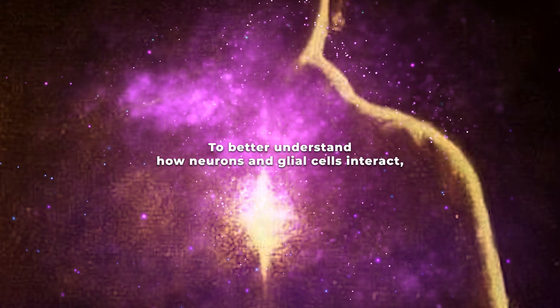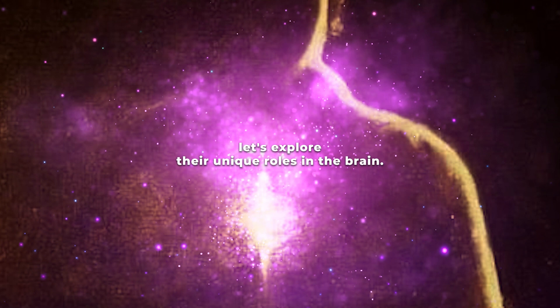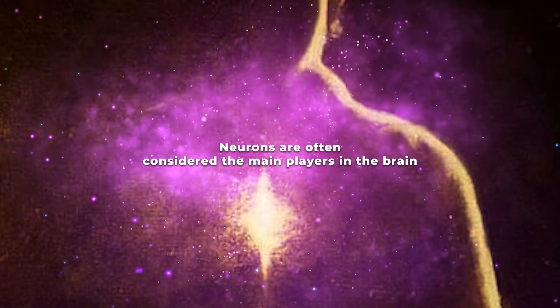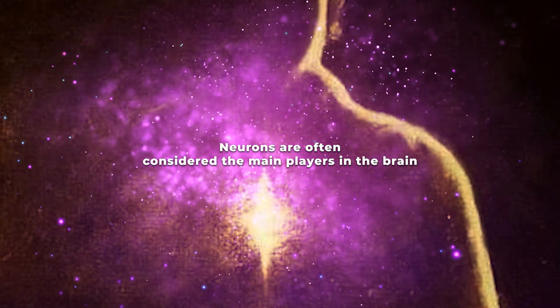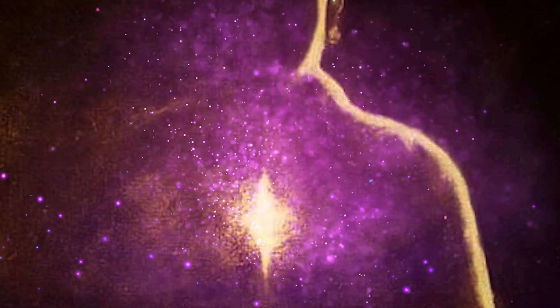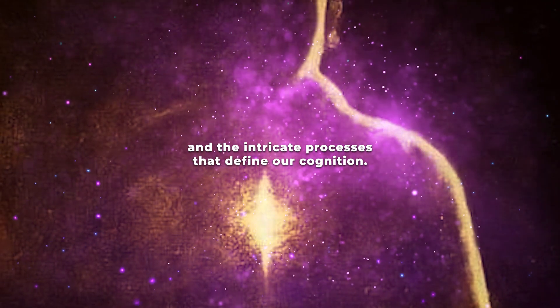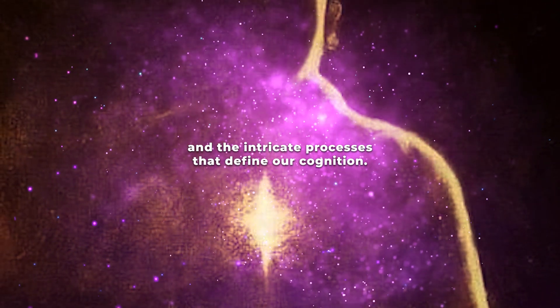To better understand how neurons and glial cells interact, let's explore their unique roles in the brain. Neurons, often considered the main players, transmit information through electrical impulses. These impulses create the basis for our thoughts, actions, and the intricate processes that define our cognition.